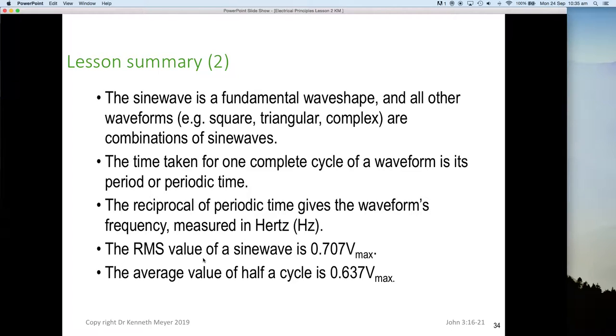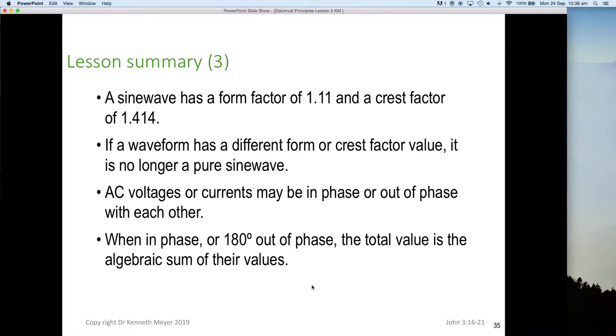True RMS values of a sine wave: this is the important number to remember, 0.707, or I remember it as 70.7 percent. So it's 0.707 of the volts max, doesn't matter whether you use volts max positive or negative. The average value of a sine wave is 0.637 of the max. A sine wave has a form factor of 1.11 and a crest factor of 1.414. If it doesn't have either of those, it's no longer a sine wave and our RMS calculation doesn't work anymore.